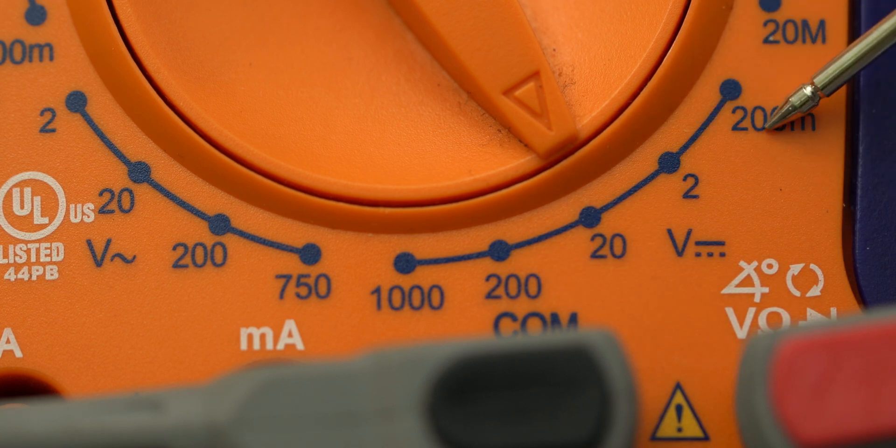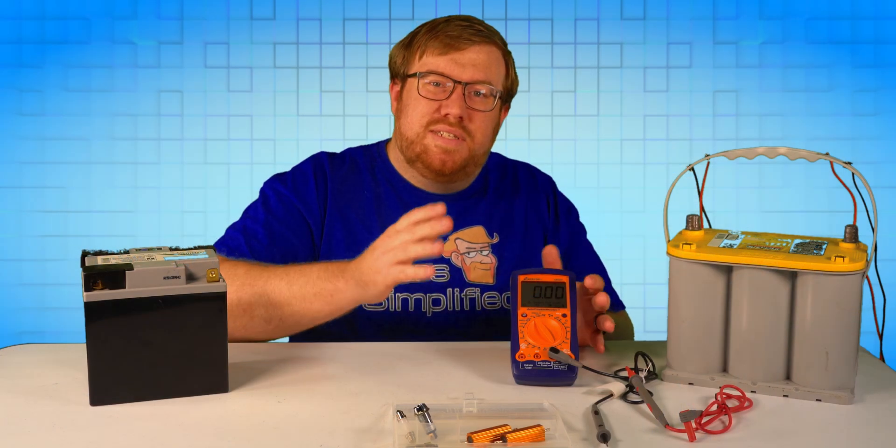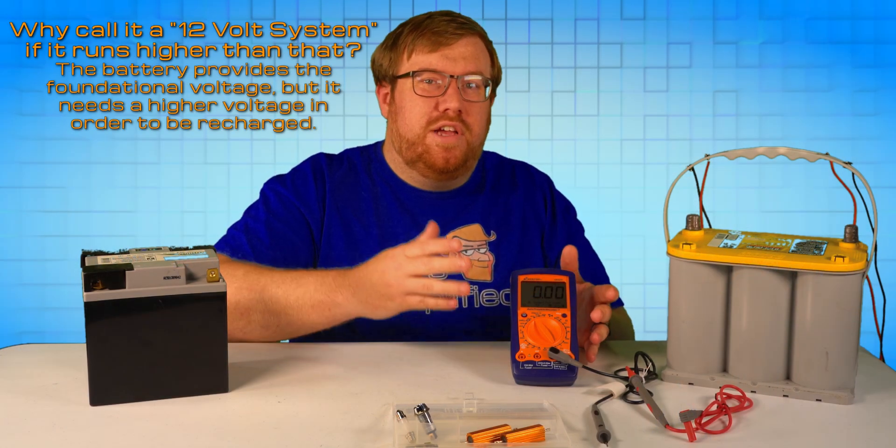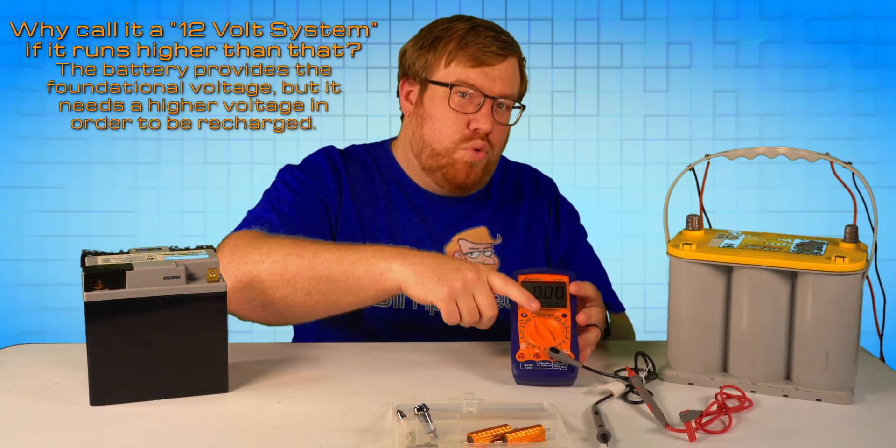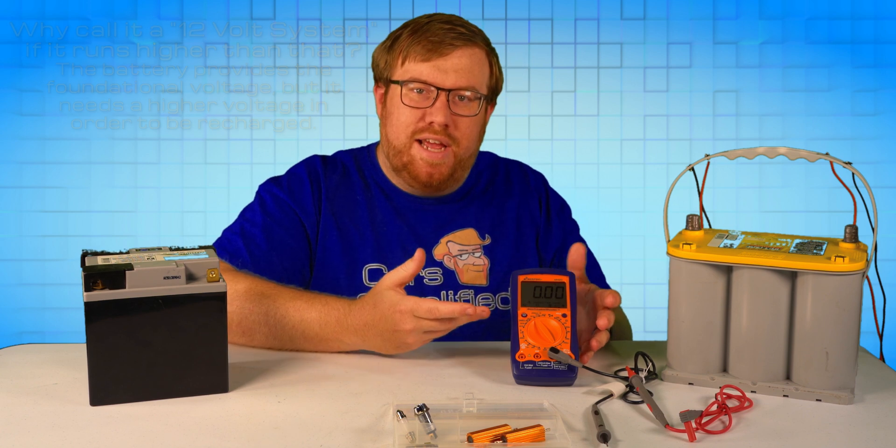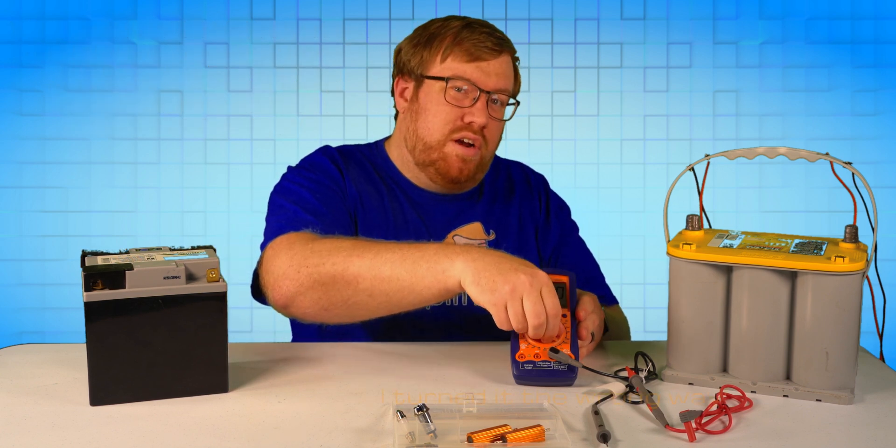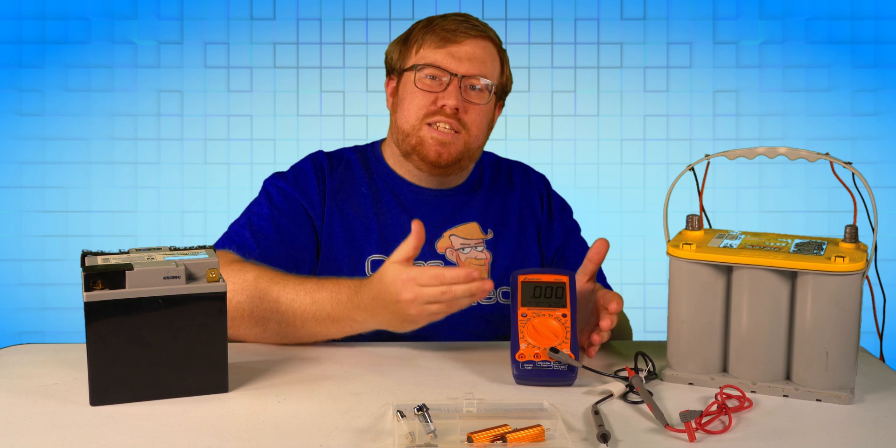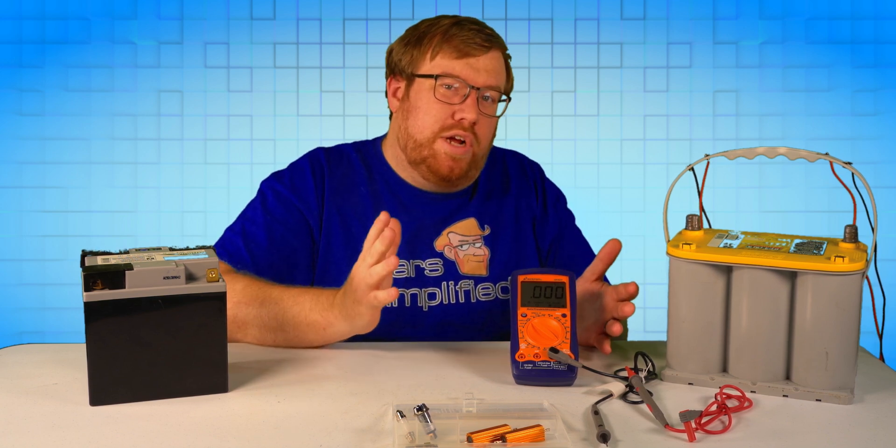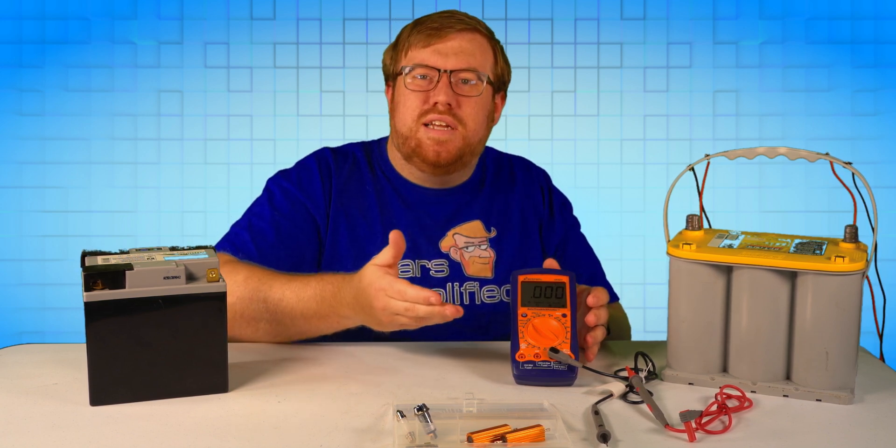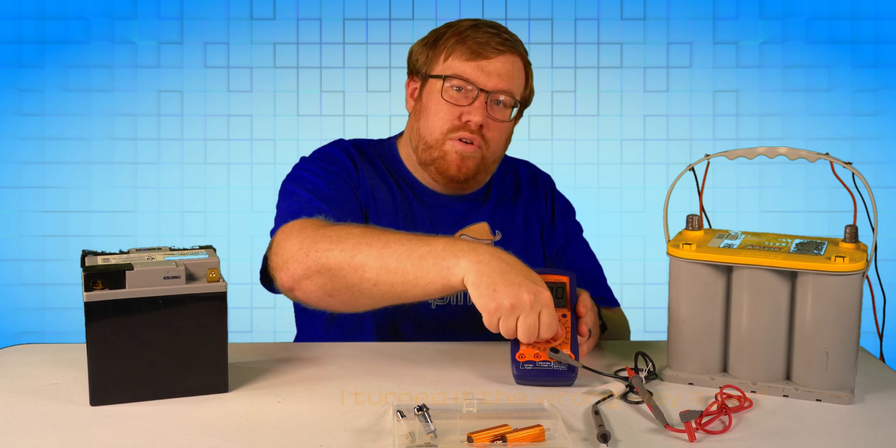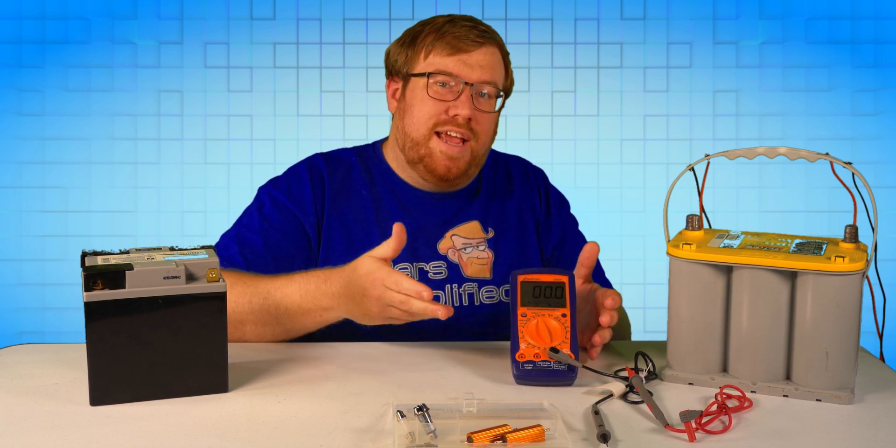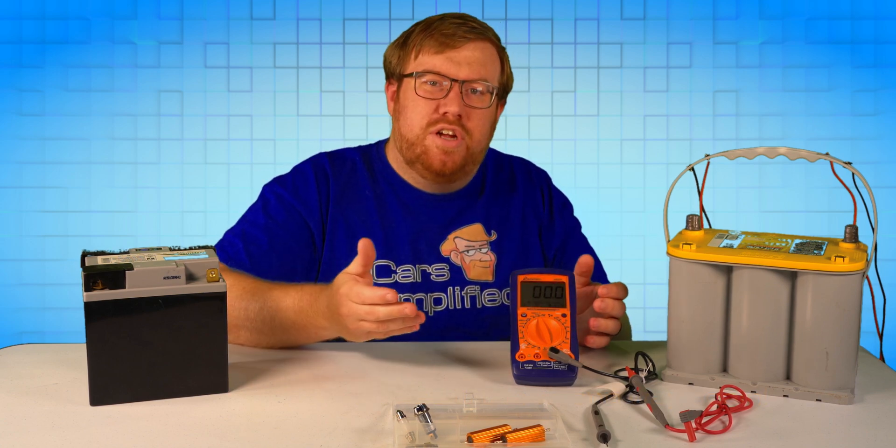Those are the maximum voltages that that setting is designed to work with. Since 12 volt systems tend to stay below 16 volts with the alternator at peak voltage, this 20 selection will work well for us today. You could use the 200 volt setting, but you will get a less precise measurement with no trade-off upside. If you selected a voltage that is too low, you will get some sort of indication that the measurement is out of range, like this.